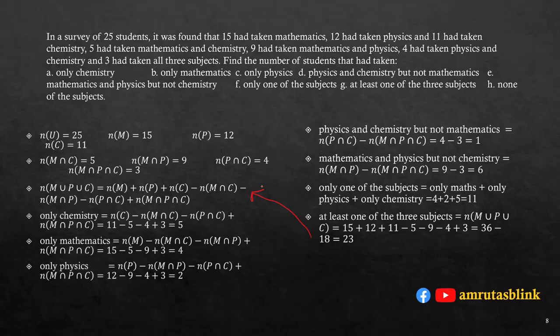23 students have taken at least one subject out of 25 total. Students who took none of the subjects: N(U) - N(M∪P∪C) = 25 - 23 = 2 students.